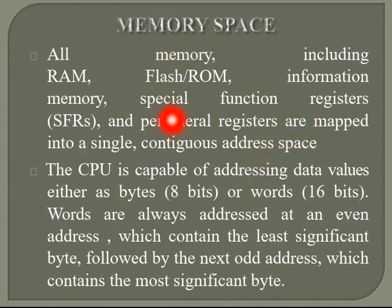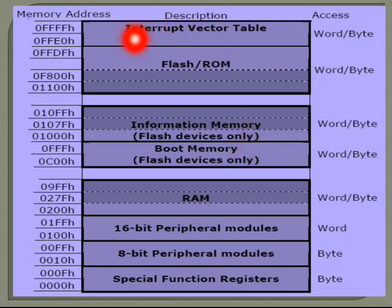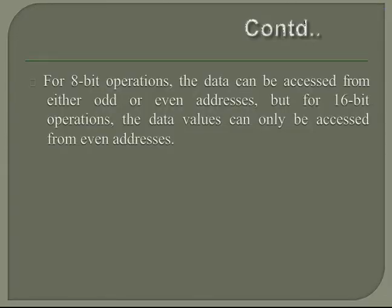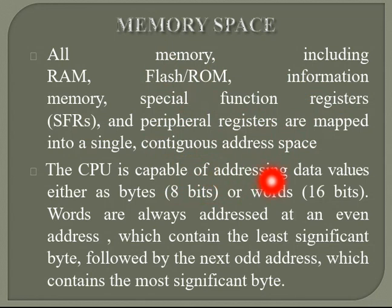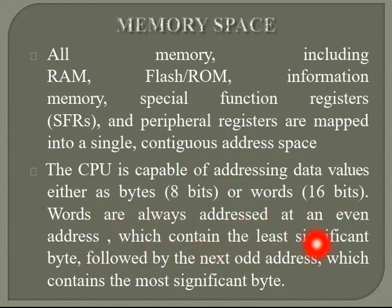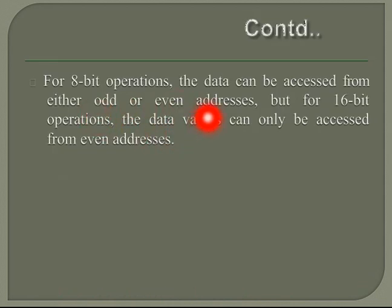Now let us look at memory space organization for the MSP430. All memory — including RAM, flash/ROM, information memory, special function registers, and peripheral registers — is mapped into a single contiguous address space. The CPU can address data values as either bytes (8 bits) or words (16 bits). Words are always addressed at even addresses, containing the least significant byte, followed by the next odd address containing the most significant byte.